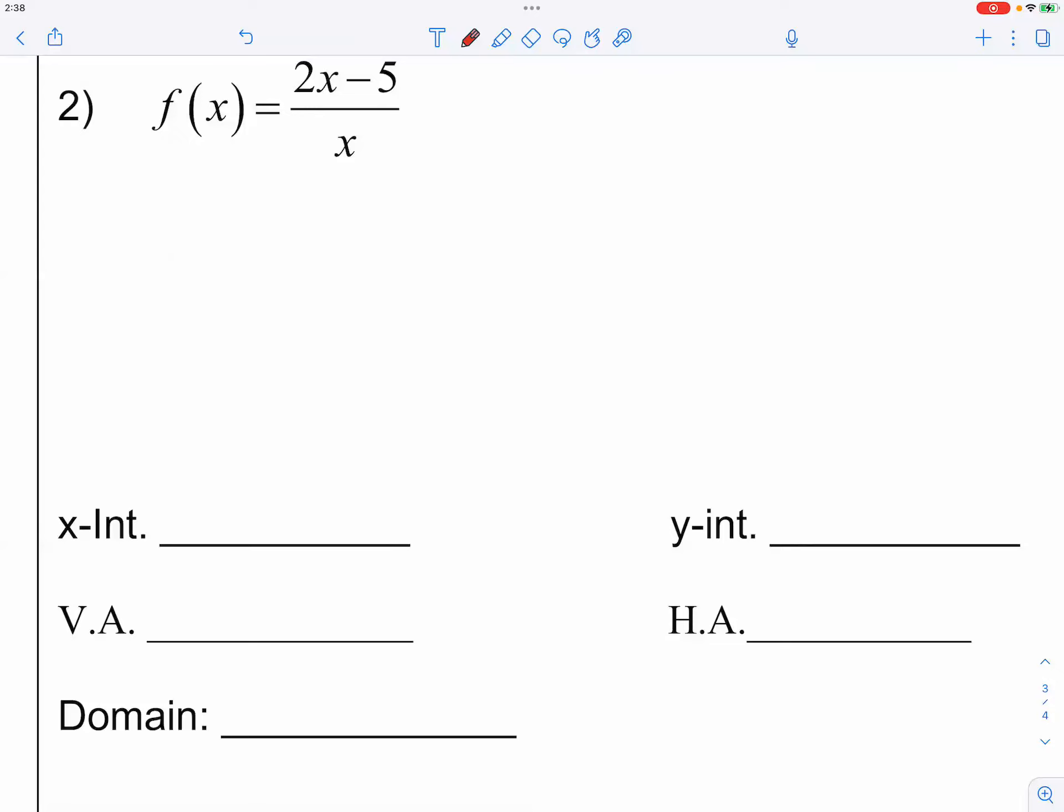For number two, the vertical asymptote is x equals zero, because that's the number that would make the denominator undefined. Zero is the number that makes the denominator zero, which makes the whole fraction undefined.